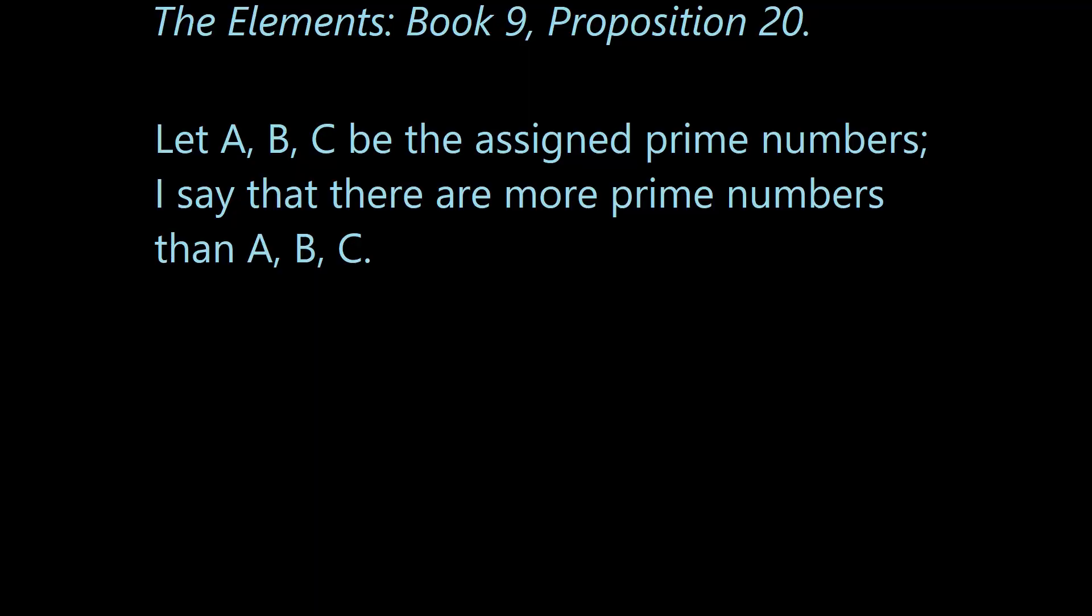Like with most proofs we start off with some definitional statements. Here we begin: let A, B, C be the assigned prime numbers. I say that there are more prime numbers than A, B, C. Now you're probably thinking, what in the world does that mean? Well, earlier Euclid had already defined what a prime number is. We don't have to do that here since most of you should already know what a prime number is. But let's just start off by giving some examples of what A, B, and C are using what we know to be prime numbers.